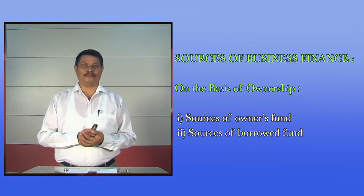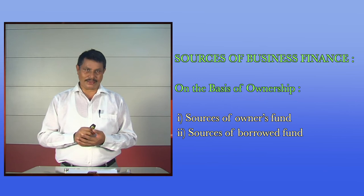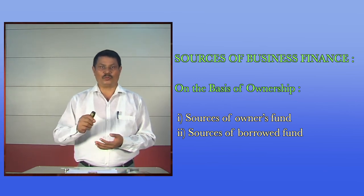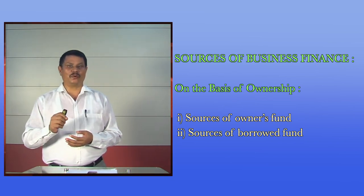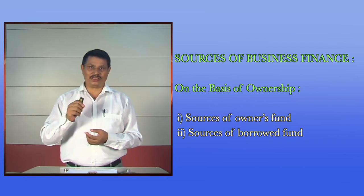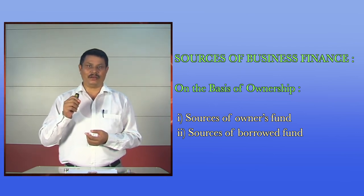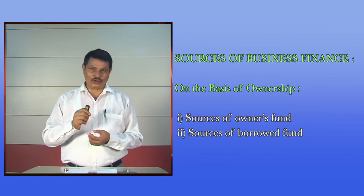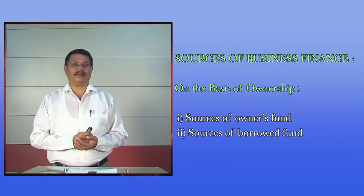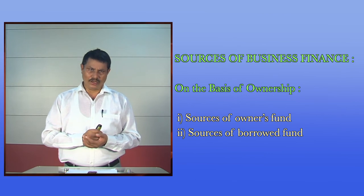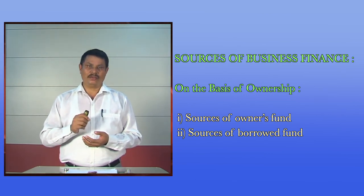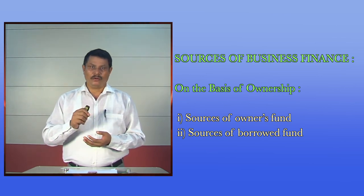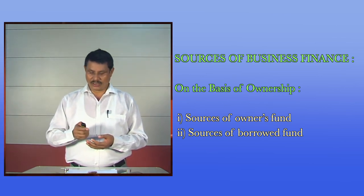Sources of ownership funds are equity shares, preference shares, and retained earnings. Sources of borrowed fund — it is the part of capital which is borrowed from the outsiders. Borrowed funds are raised by way of loans from public and credit from banks and other financial institutions. Sources of borrowed funds are debentures, public deposit, banks and financial institutions, etc.